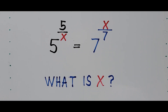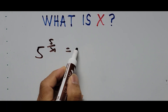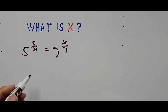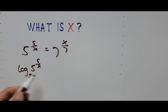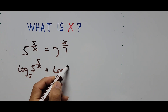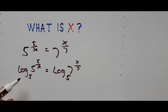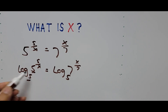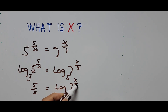So we rewrite the equation: 5 raised to the 5 over x equals 7 raised to x over 7. We take the logarithm of both sides — that is, logarithm base 5 of 5 raised to 5 divided by x equals logarithm base 5 of 7 raised to x divided by 7. Taking the logarithm base 5 of 5 to the same base cancels, and that becomes the exponent 5 divided by x equals logarithm base 5 of 7 raised to x divided by 7.